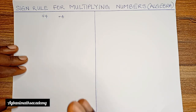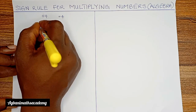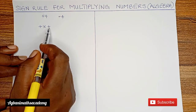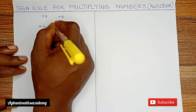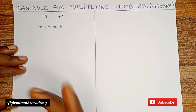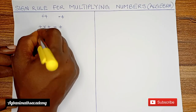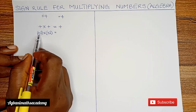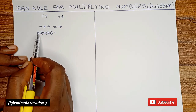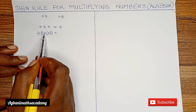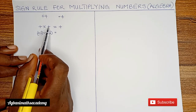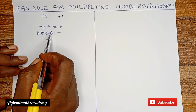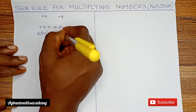The first case is when the signs in front of the two numbers you are multiplying are both positive. If you have two numbers with positive signs, your answer will be positive. For example, plus 2 multiplied by plus 2: first multiply the signs — plus multiplied by plus gives us plus — then multiply the numbers: 2 multiplied by 2 gives us 4.